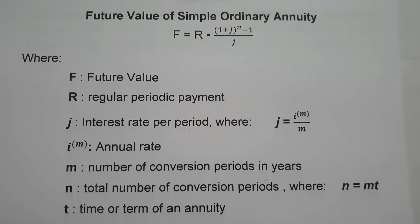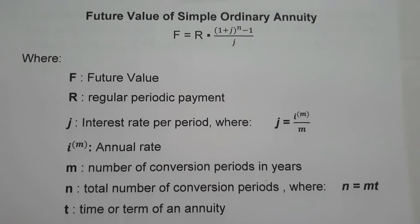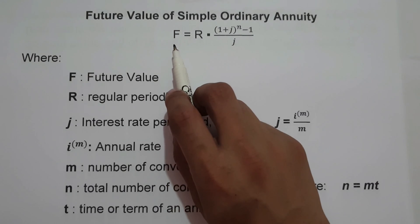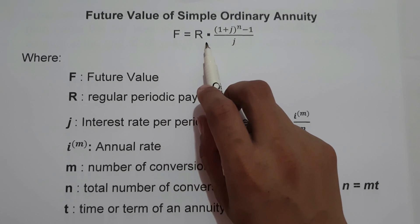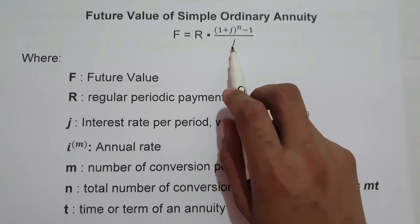In this video, we are going to talk about how to compute for the future value of simple ordinary annuity. When we say simple ordinary annuity, it is an annuity where the payment interval is the same as the interest period, and payments are made at the end of each payment interval. To find the future value, we use the formula: F equals R multiplied by the quantity of 1 plus j raised to n minus 1, all over j.